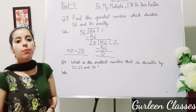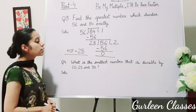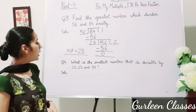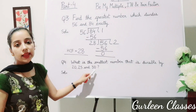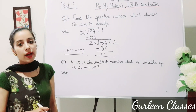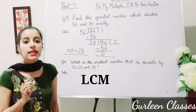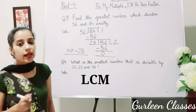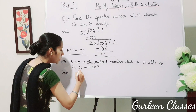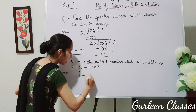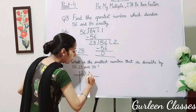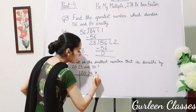Question number 4: What is the smallest number that is divisible by 20, 25, and 30? For the smallest number, we have to find the LCM. So let us find the LCM by the short division method. Draw a line and write: 20, 25, 30.